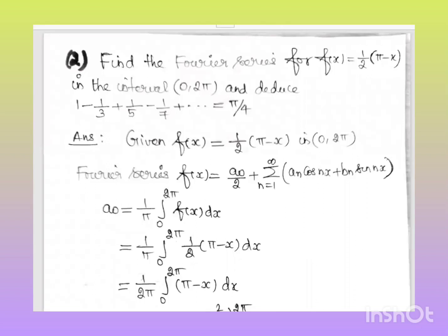Welcome to Prissy Anto Educational Academy, Chennai 71. Find the Fourier series for f(x) = ½(π - x) in the interval [0, 2π] and deduce 1 - 1/3 + 1/5 - 1/7 + ... = π/4.